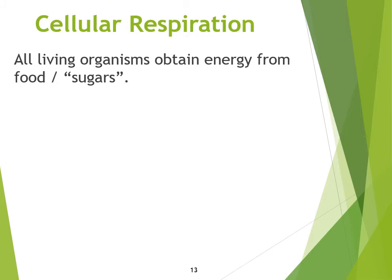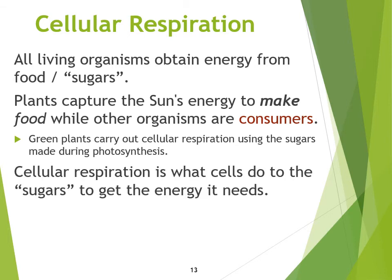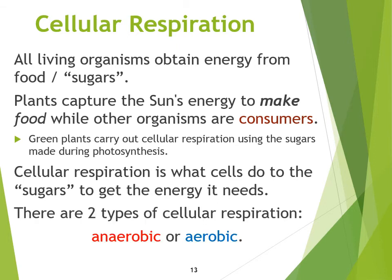Now I'd like to talk about cellular respiration. All living organisms get energy from the foods and sugars. Plants take the sun's energy to make the food, so we call them producers. The other organisms that eat plants or eat each other are basically consumers. Green plants actually use the sugars made during photosynthesis to carry out cellular respiration — the process that cells use to break down sugar and get energy. There are actually two types of cellular respiration: anaerobic cellular respiration and aerobic cellular respiration.